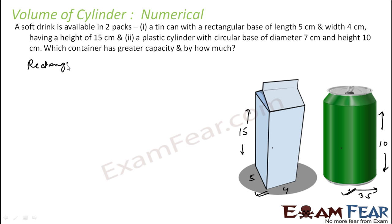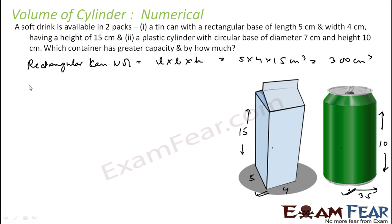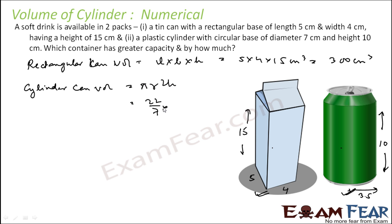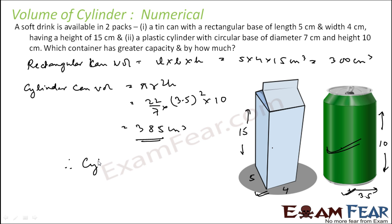Rectangle can volume equals L × B × H = 5 × 4 × 15 = 300 centimeter cube. Cylinder can volume equals π r² h = 22/7 × 3.5² × 10 = 385 centimeter cube. Since 385 > 300, the cylinder can has more capacity.